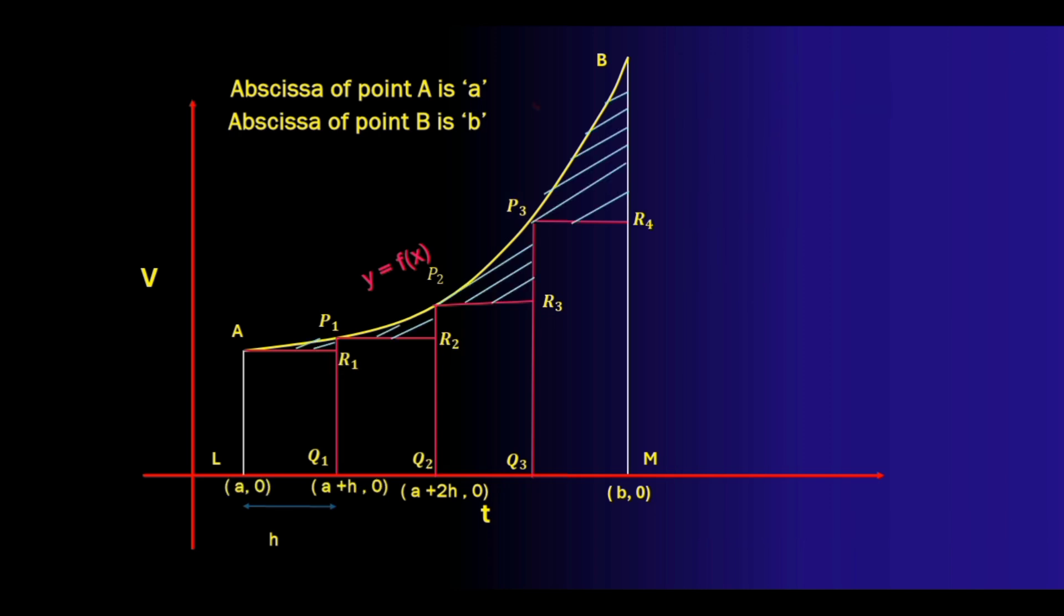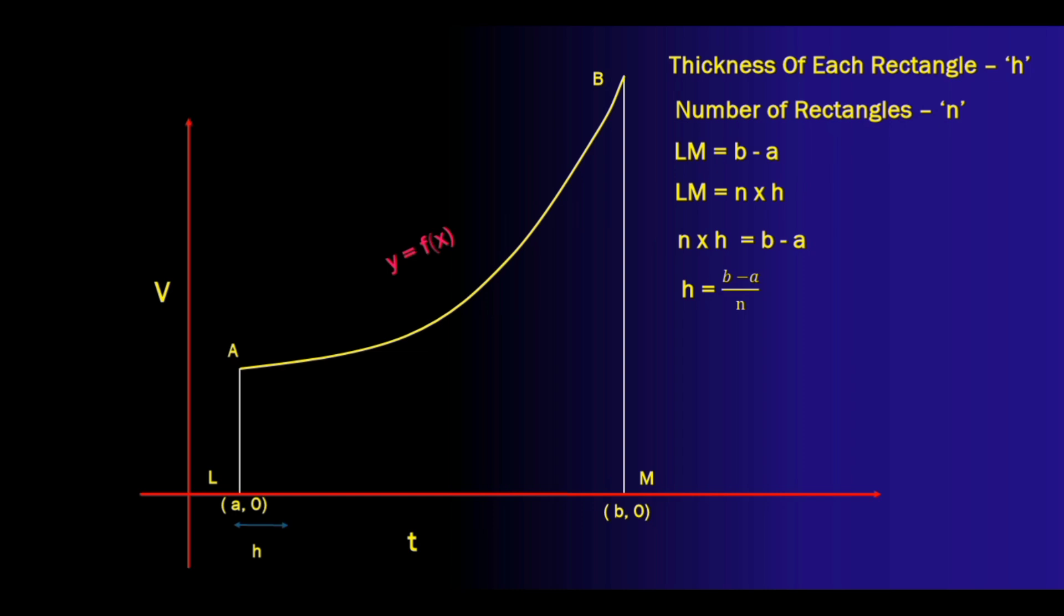So the area of the strip ap1q1l is the sum of the areas of ar1q1l and that of the shaded region ap1r1. Unfortunately we still cannot find the area of the region ap1r1 which is shaded. So what we do is we divide the same region under the curve into more number of rectangles.